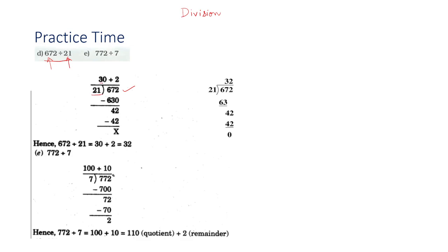I have written 30 over here. You can see 21 times 30 equals 630. When you subtract it, you will get 42 as the answer. Next, you have to add a plus sign and multiply 21 by 2, because 21 times 2 equals 42. Here I have written 42, and 42 minus 42 equals 0. This is your remainder.